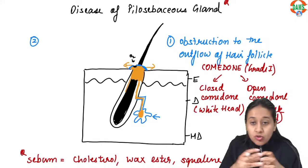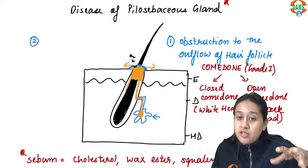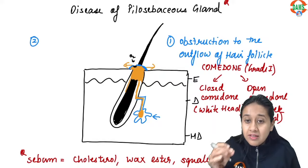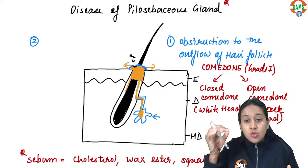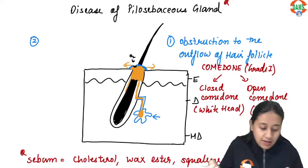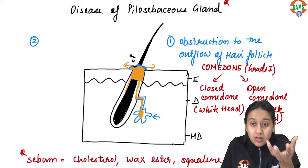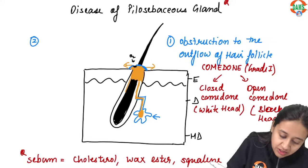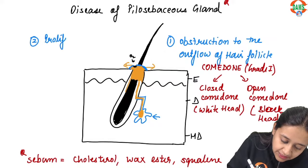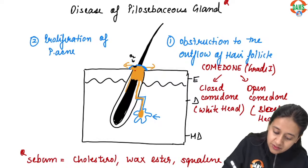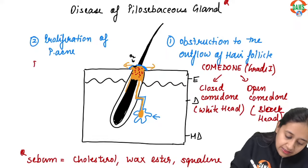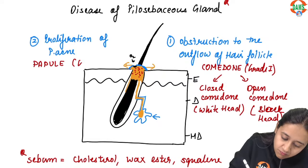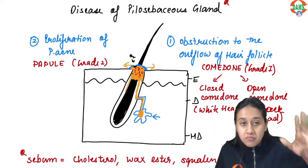Due to the obstruction, the bacteria normally present in the hair follicle — Propionibacterium acnes, a normal commensal — starts proliferating. This bacterial proliferation causes increased bulging of the follicle, and clinically you see a papule. This is Grade 2 of acne.